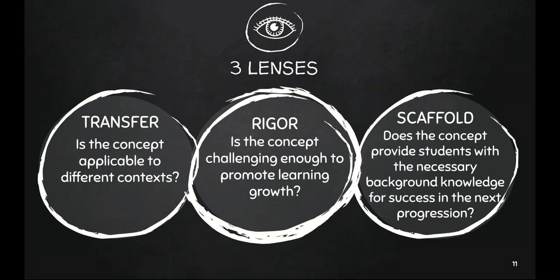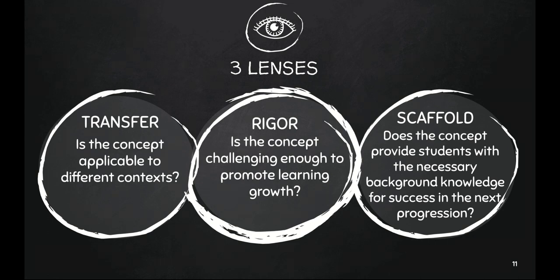In the transfer lens, consider whether the skill or concept provides applications to many academic disciplines, different grade levels, or different real-life connections. Under the rigor lens, rigor comes from the challenge of the learning goals — consider which DOK level the concept or skill aligns with. We will discuss DOK levels in the next slide. In the scaffolding lens, instructional scaffolding provides the necessary cognitive support for students to be ready for learning at the next level.